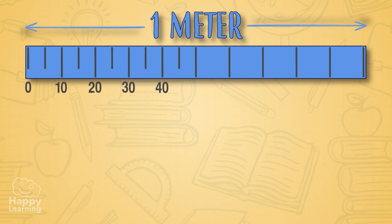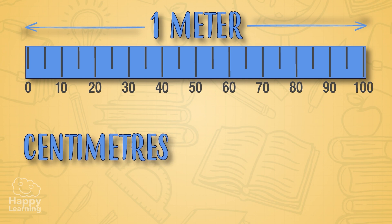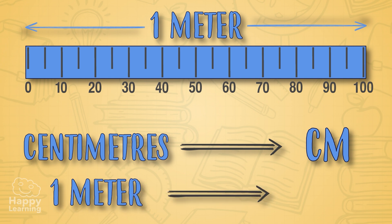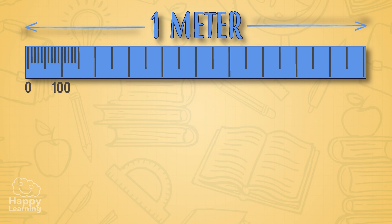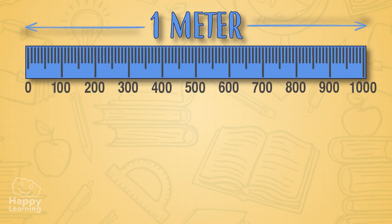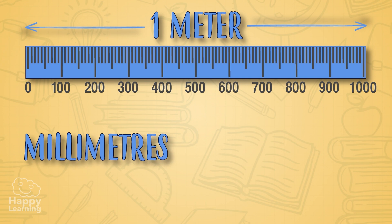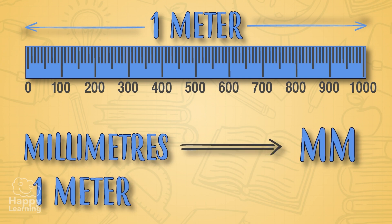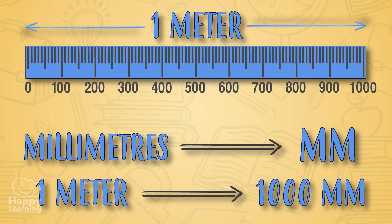If we divide the metre into 100 equal parts, we call these centimetres, represented with the letters CM. A metre has 100 centimetres. And if we divide the metre into 1000 equal parts, we call these tiny parts millimetres, represented by two M's. One metre has 1000 millimetres.